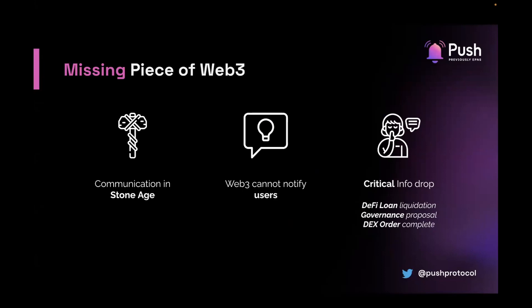What I mean by this is that today, protocols expect users to go back to the protocol themselves to fetch information. For example, let's say you took a loan from a decentralized lending protocol — how do you know you're about to get liquidated? We actually don't know. If you don't actively keep fetching the information yourself, you're simply going to get liquidated. It would be much easier to get a notification before getting liquidated whenever your collateral ratio is not good. That's how we do it in Web2 — whenever I receive an email, I'm not pressing F5 on Gmail all the time. I just receive a notification and click on it. That's not how we do it in Web3.